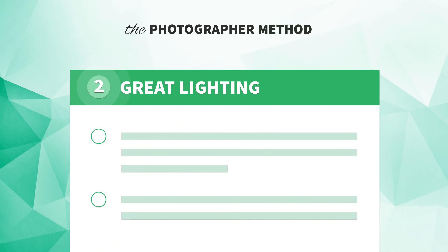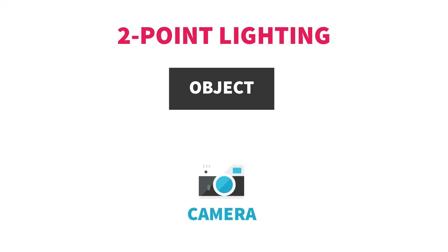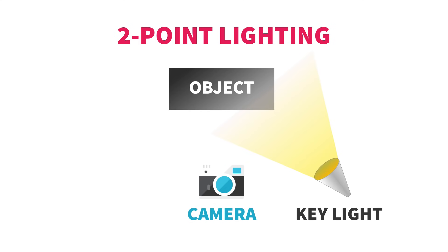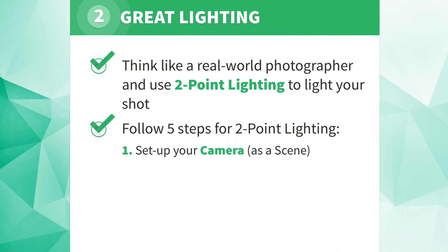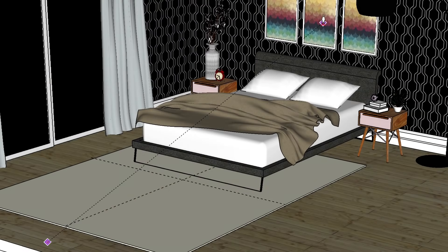Alright, so once you've got the right gear for the job, the next part of the photographer method is that you'll need to set up great lighting. Imagine you're back in the real world. Thinking about it like a professional photographer, you can use two-point lighting to light your shot. What's two-point lighting? It's a simple technique where you set up your camera angle, then add a primary or key light on one side, and then add a secondary or fill light on the opposite side. In SketchUp, use this same technique.